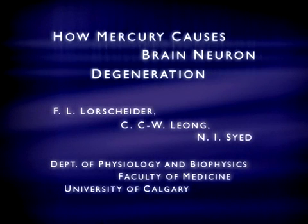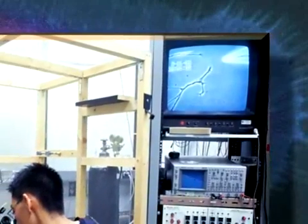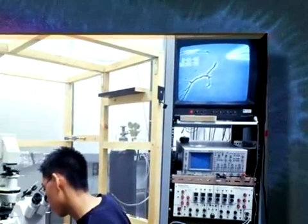How Mercury Causes Brain Neuron Degeneration. Mercury has long been known to be a potent neurotoxic substance, whether it is inhaled or consumed in the diet as a food contaminant.